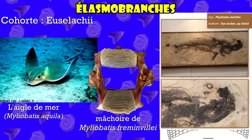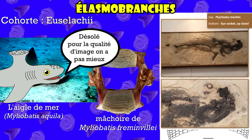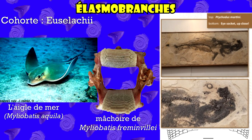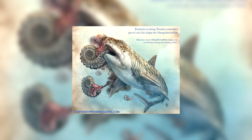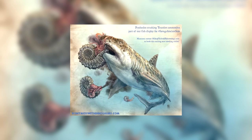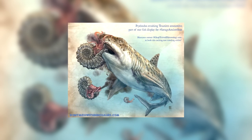Lorsque l'on regarde ce fossile, Ptychodus a plus l'air d'un requin que d'une raie. Cependant, pour être sûr qu'il s'agisse d'un requin, d'une raie ou d'un autre groupe, il faut étudier les squelettes. Ce spécimen est un des rares squelettes plus ou moins complets de ptichodontes. Il n'a cependant pas encore été étudié et a été volé courant 2019, mais il a été retrouvé en début d'année 2020. Ce spécimen sera vendu à un musée où il sera étudié en bonne et due forme. Sa place est dans un musée ! Beaucoup de mystères planent encore au-dessus de ce poisson et nous en saurons bien plus d'ici quelques années.